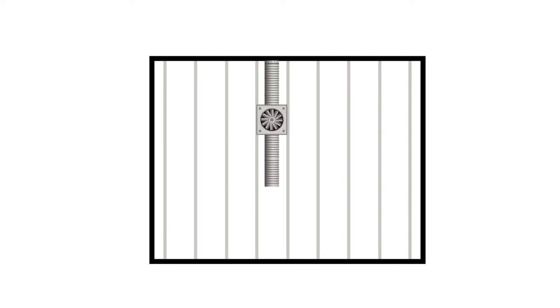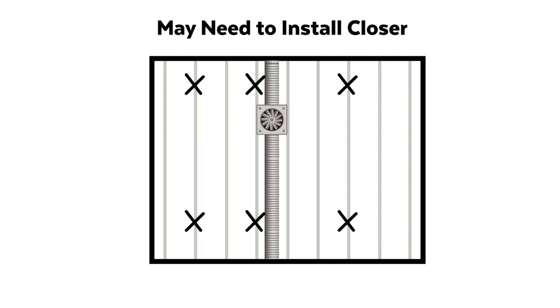Depending on your joist layout or obstructions, you may need to install wires closer than 4 feet apart.